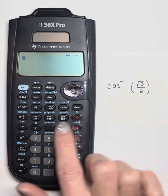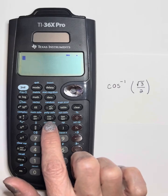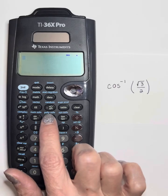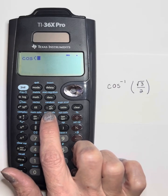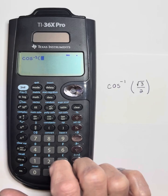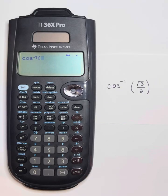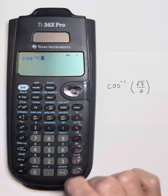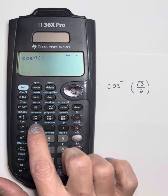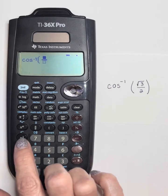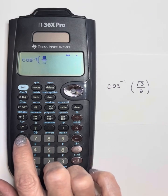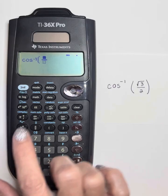We simply press the button twice. If I want cosine inverse, I use the cosine button — hit it once and I get cosine, hit it twice and it goes to cosine inverse. Now I'm going to put in the square root of 3 over 2 using my fraction key. I need the square root symbol — since it's blue above the button, I'll press second and then the square button.